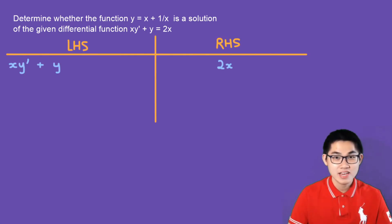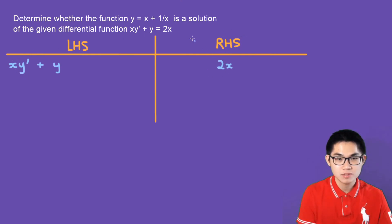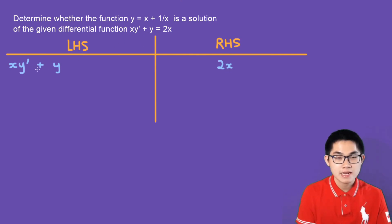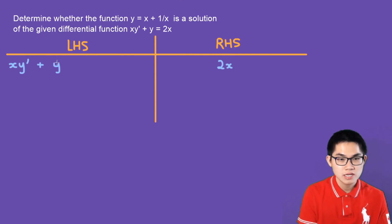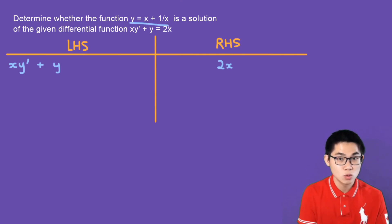It is very easy. All you have to do is put the left-hand side into this column and the right-hand side into this column. So you see 2x on one side and x·y′ + y on the other. You just substitute y into the equation and see if both sides are the same. If they are, then this function is a solution to the differential equation.